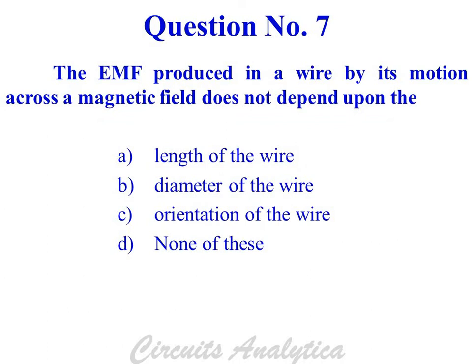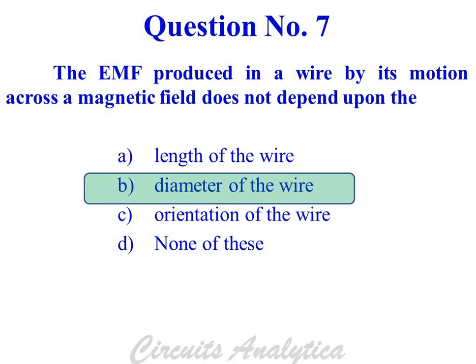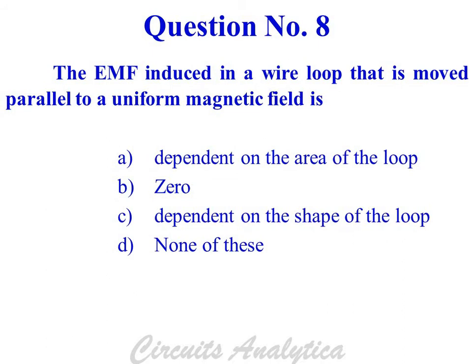The EMF produced in a wire by its motion across a magnetic field does not depend upon the diameter of the wire. The EMF induced in a wire loop that is moved parallel to a uniform magnetic field is zero.